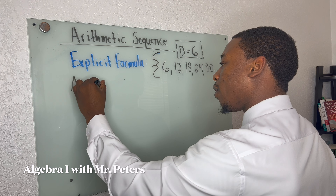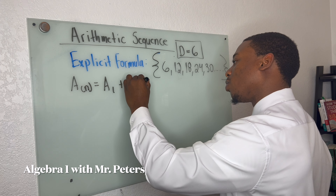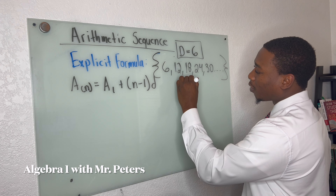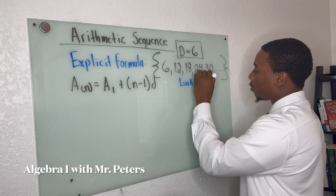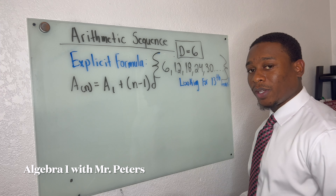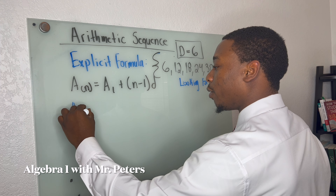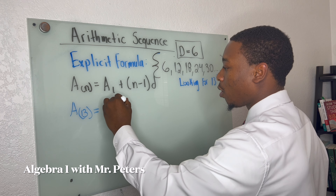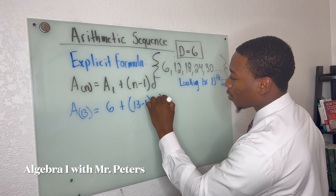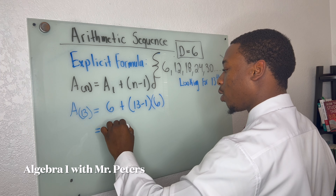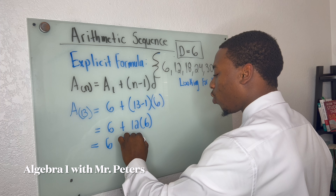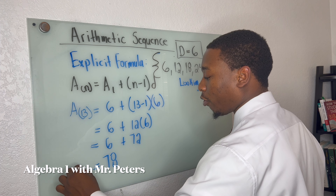I write the formula out. We're going to solve by just substituting in — we're not going to create the equation first. We are looking for the 13th term of this sequence. So substituting in: a(13) equals 6, our first term, plus 13 minus one, times our common difference of six. Simplifying, we get 6 plus 12 times 6, which gives us 78 as our 13th term.